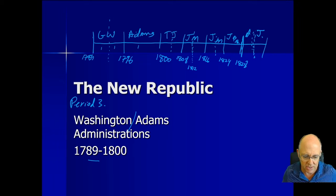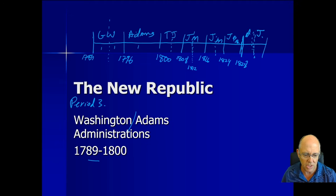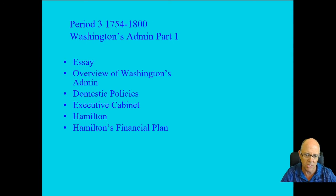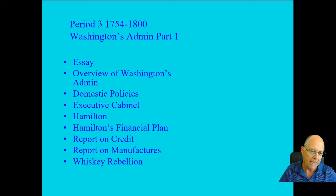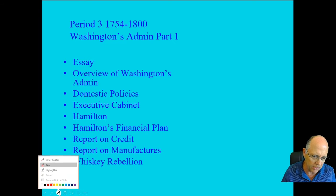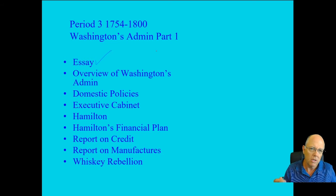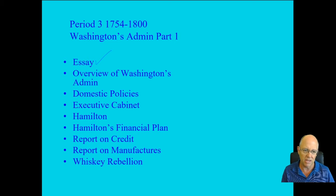What we're going to talk about with this PowerPoint is both the Washington and Adams administrations — 1789 to 1800. It is the last of Period Three for the AP organization. Washington's administration is what we're going to cover in this portion. We're also going to look at an essay; remember, you're practicing the essays, and I'm giving you study guides. Here's one more essay I'll go over briefly.